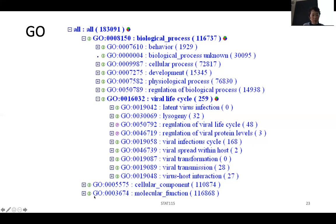But if we open the biological process, you can see here, there are more items in here. For biological process, there's behavior, unknown process, cellular process development, physiological process, regulation of biological process, and viral lifecycle. And if we were to click the viral lifecycle, it will go to even more terms.